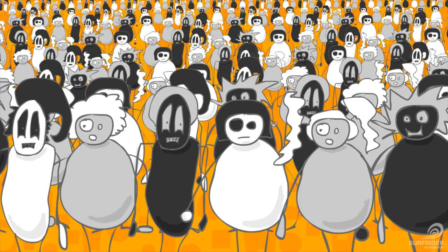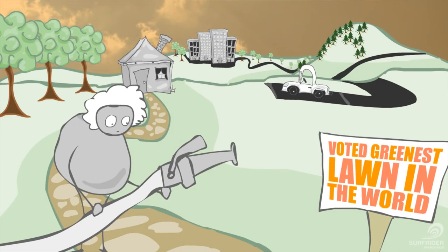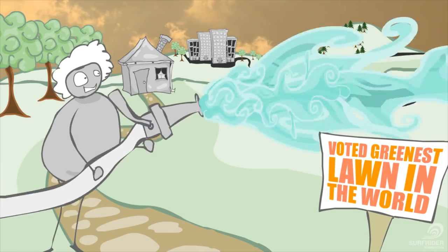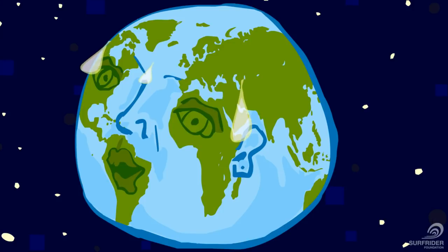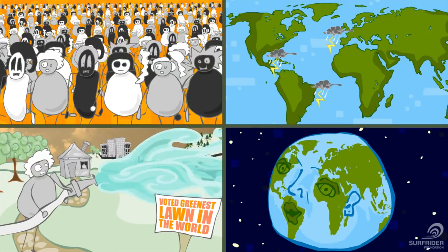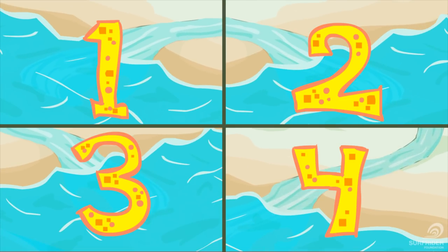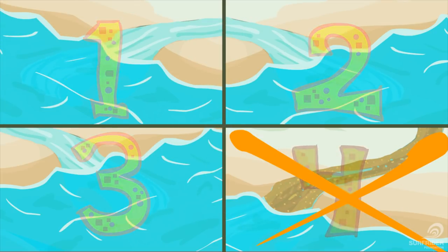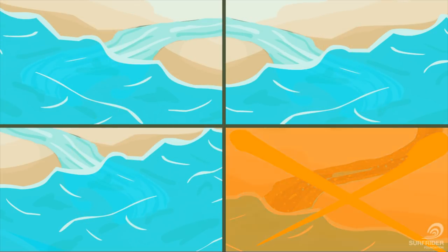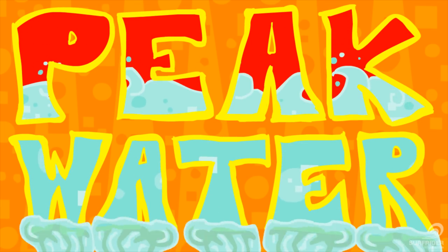An increasing population, combined with changing rainfall patterns and our wasteful use of water, is creating a global water crisis. Many people no longer have access to clean, fresh water. In fact, today one in four rivers no longer flows to the ocean. Our coastal saltwater environments are suffering from this mismanagement of dwindling fresh water resources. We are reaching peak water — the limits of our water supply.